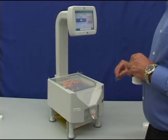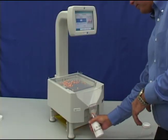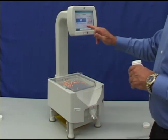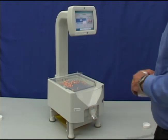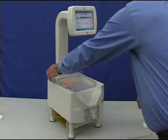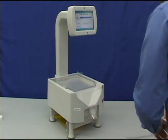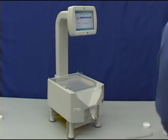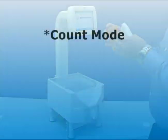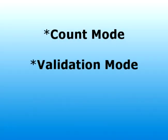Remove any excess pills from the platter and return them to the stock bottle. Press Finished on the screen, tip the platter, and dispense the pills into the prescription vial. And that's all there is to it. The next mode of operation is the validation mode.